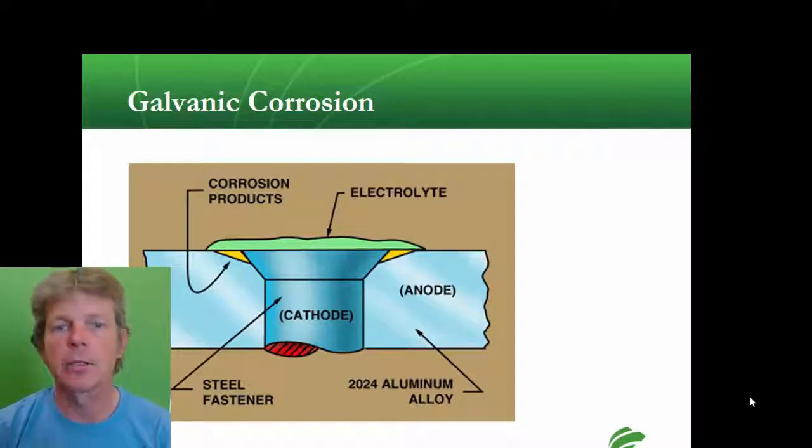These are dissimilar metals—one is steel, one is aluminum—and they do not get along. There's an anode and a cathode. The anode gives up particles and the cathode receives particles.